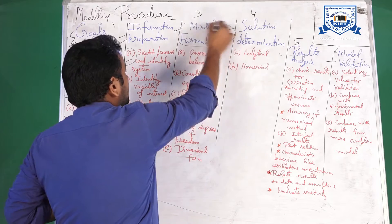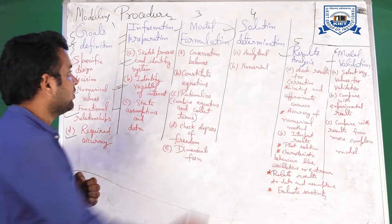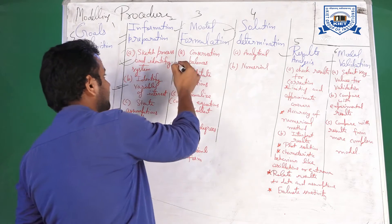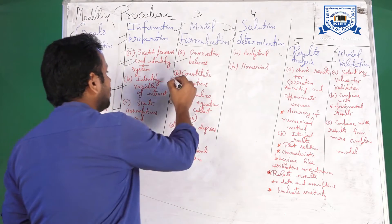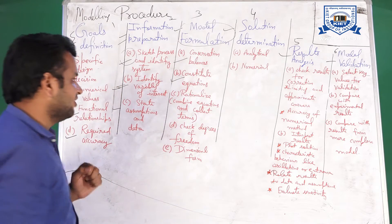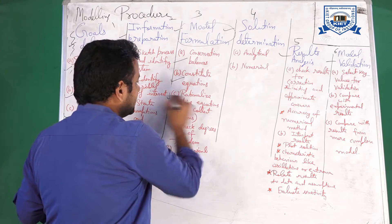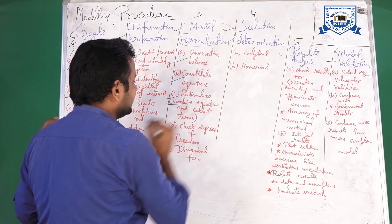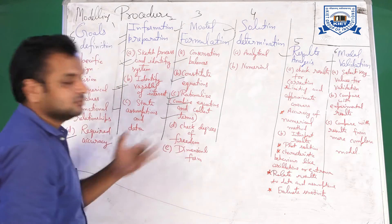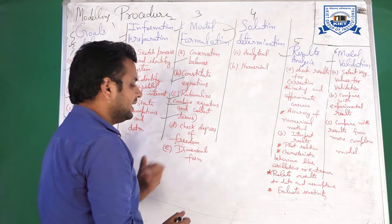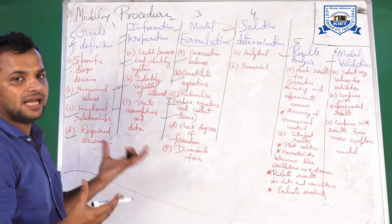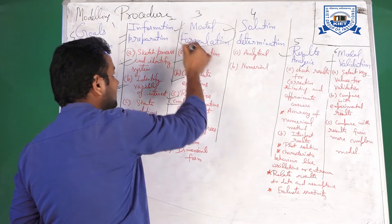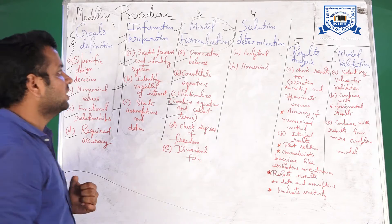The third step is model formulation. In model formulation, you define your model based on conservation balances, constitutive equations, rationalization, combination of equations, collecting terms, degree of freedom, or dimensional analysis — these are the basic dimensions of your formulations.